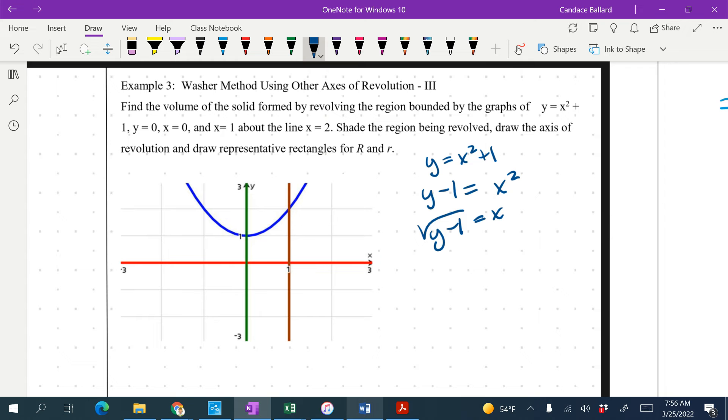We're going to find the volume of the solid formed by revolving the region bounded by the graphs of y equals x squared plus 1, which is the blue one. And you'll notice I solved it already to put it in terms of x. Y equals 0, which is the red one. X equals 0, which is green, and x equals 1, which is brown.